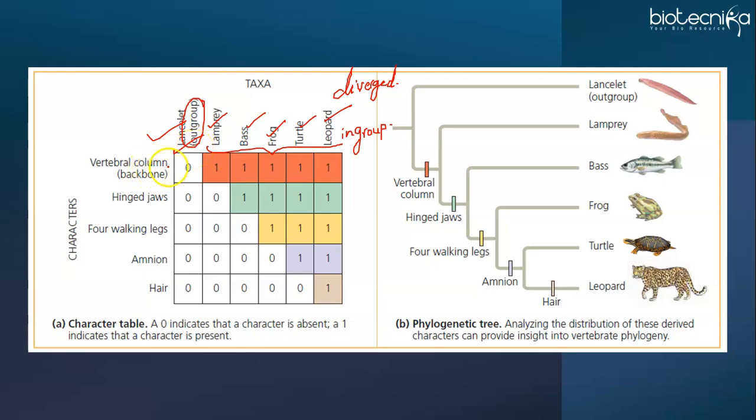A suitable outgroup, you can determine based on the evidence from morphology, paleontology, embryonic development and even gene sequences. An appropriate outgroup for our example is lancelet, a small animal that lives in mudflats. And like vertebrates, it is a member of Chordata. Unlike the vertebrates, however, the lancelet does not have a vertebral column or backbone. By comparing the members of the in-group with each other and with the out-group, we can determine which characters were derived at the various branch points of vertebrate evolution.